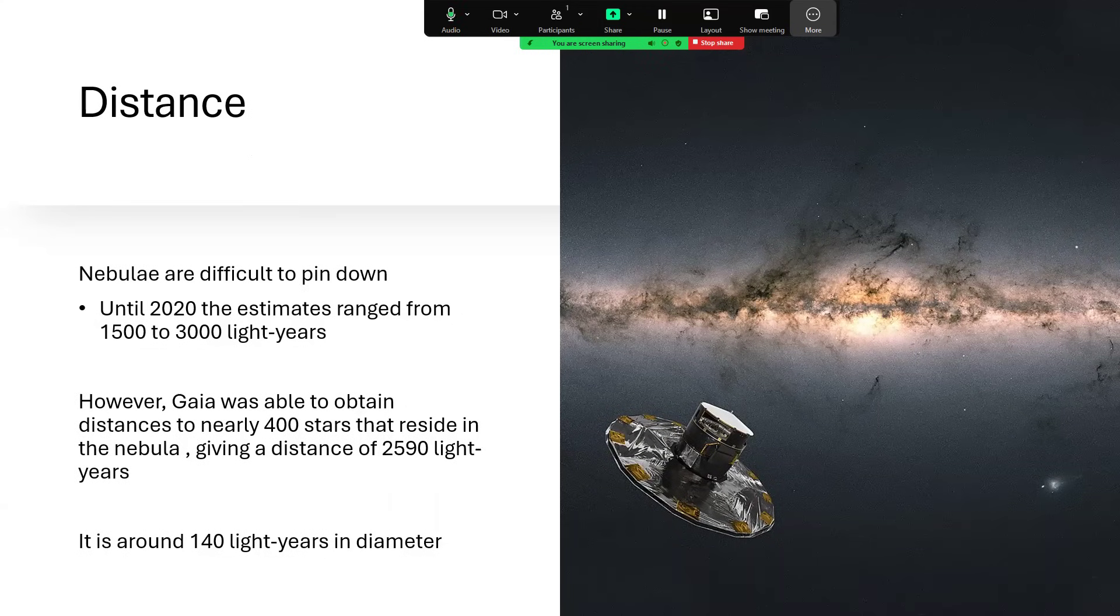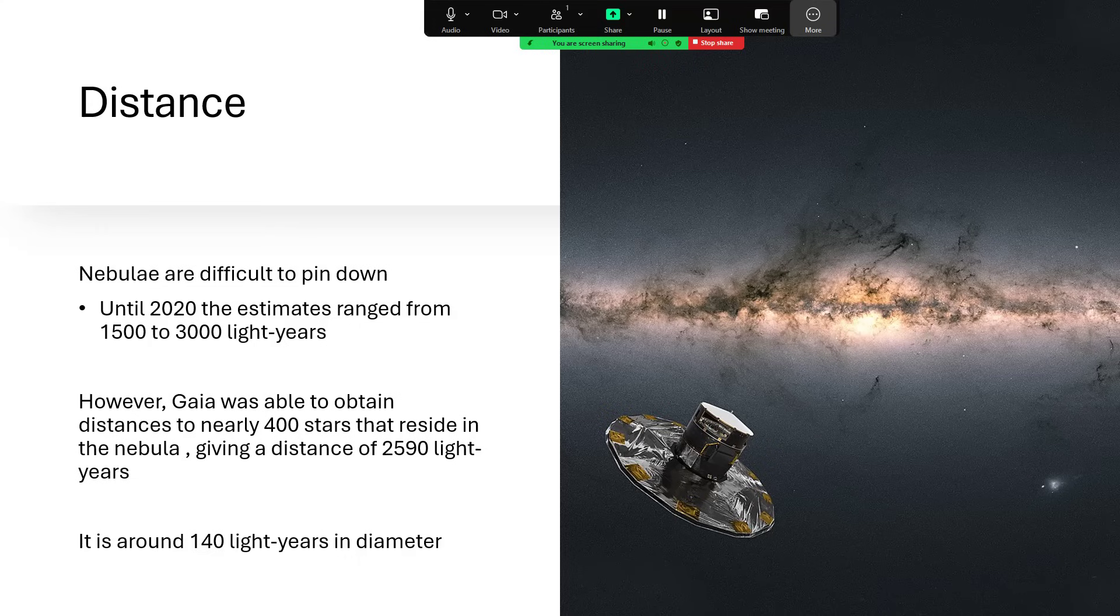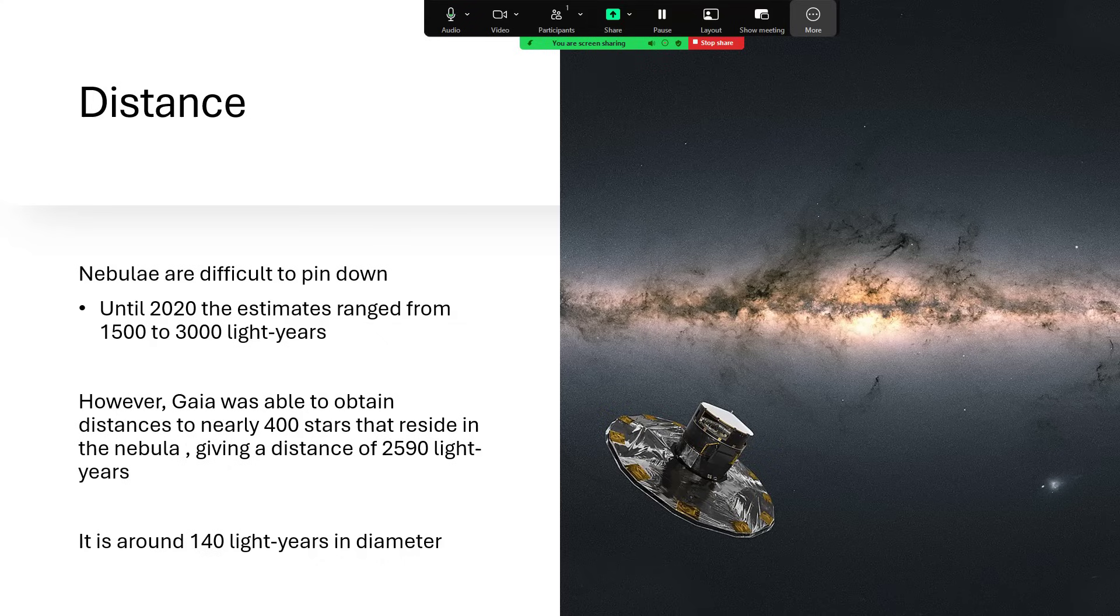In terms of distance these nebulae are very difficult to pin down. There's really precious little to lock on to in ordinary circumstances, and so until 2020 the estimates of the range to the North American nebula were anything from 1500 to 3000 light years, a factor of two uncertainty. But Gaia space telescope was able to obtain images of about 400 faint stars that lie within the nebula.